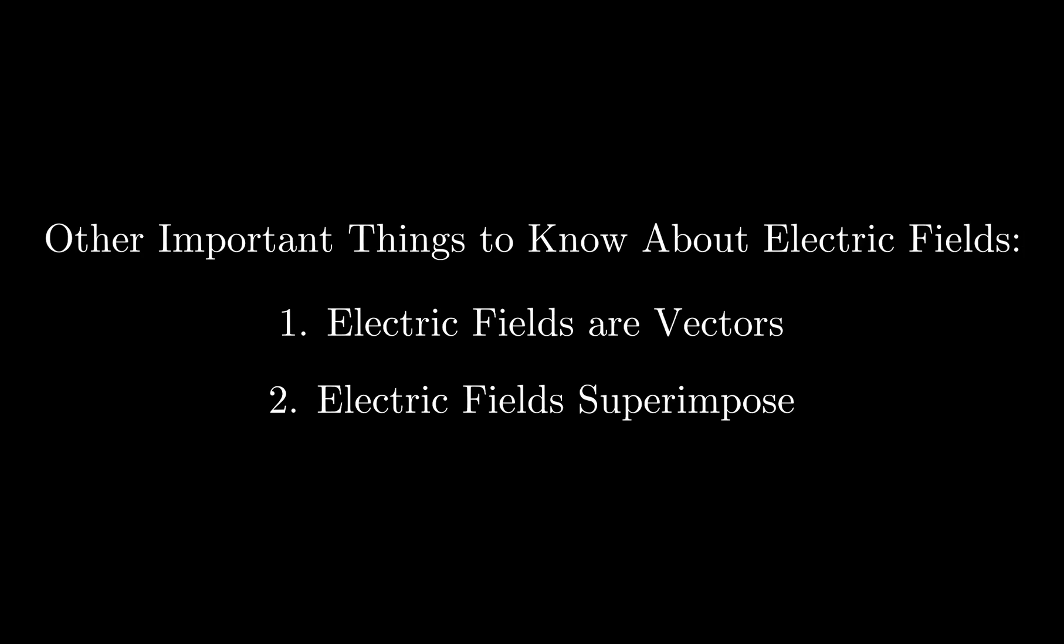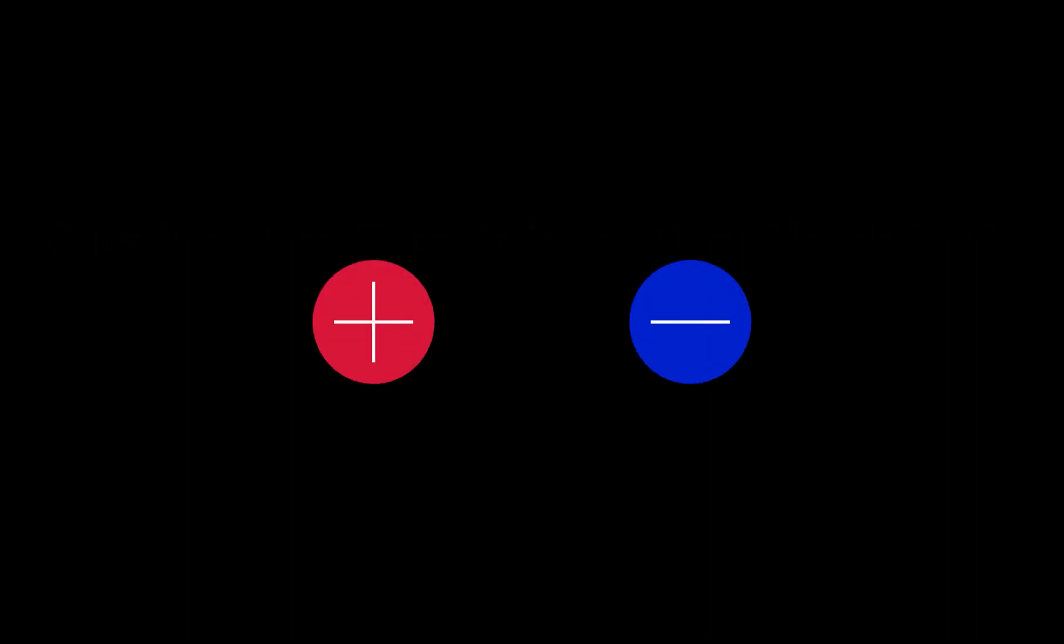Secondly, electric fields obey the law of superposition. That means if we have two charges, the electric field in the area around the charges is equal to the sum of the electric field generated by both charges.